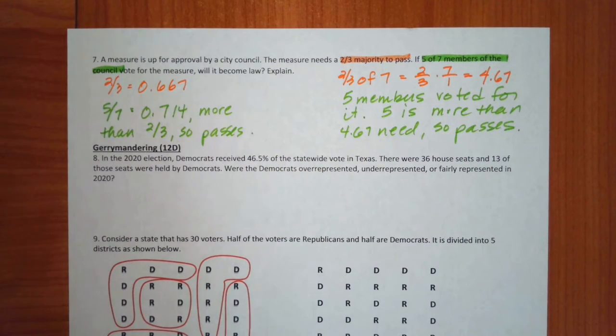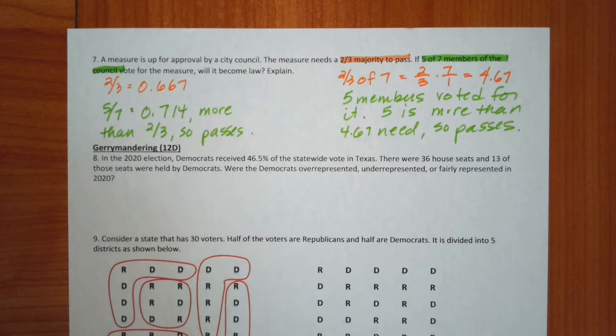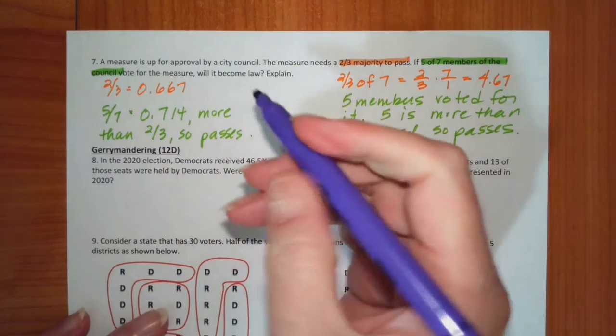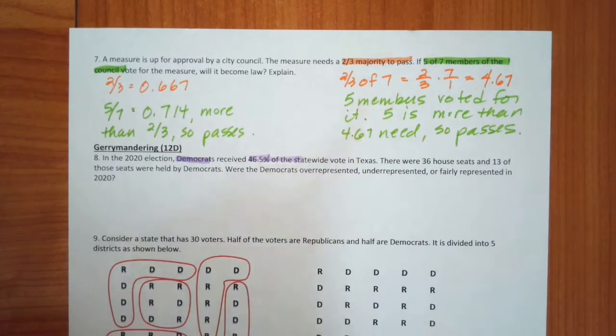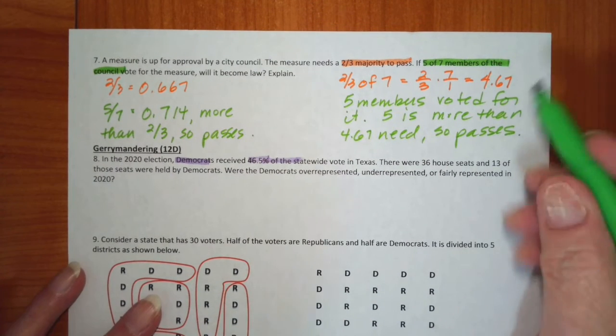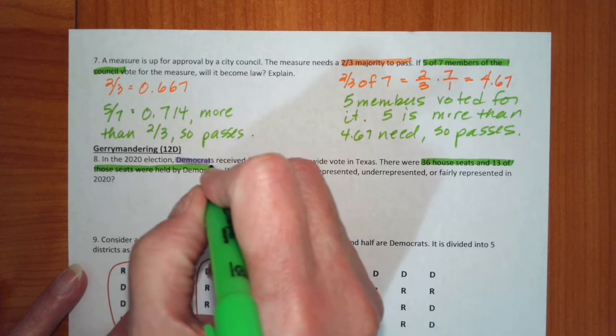Let's talk about gerrymandering now. We know what gerrymandering is. It is a way of influencing district boundaries to support whatever cause there is. And it leads to some things being underrepresented, some being overrepresented. Alright, so in the 2020 election, Democrats received 46% of the statewide votes in Texas. So Democrats are 46% of the state. And it also says here that there were 36 House seats and 13 of those were held by Democrats.